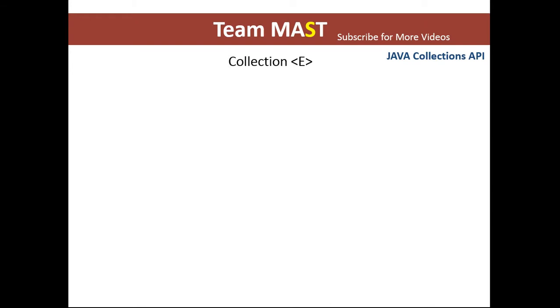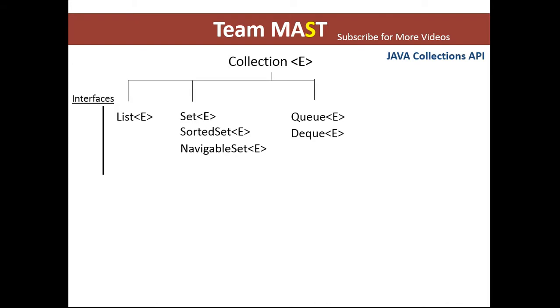Let's see the structure of the collection API in Java. First of all, we have the collection interface, which is the root interface of the Java collection API. Next, we have interfaces such as list, set, queue, and so on, which extend the collection interface.